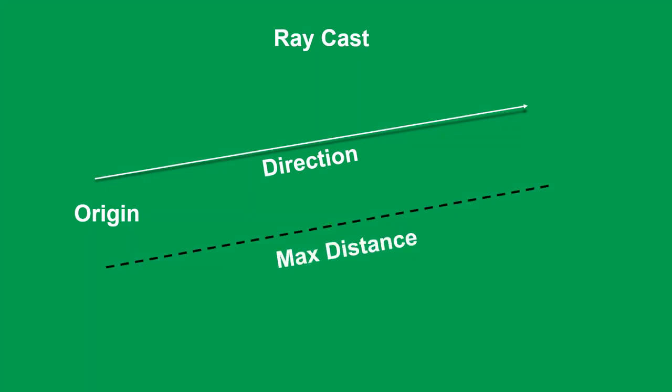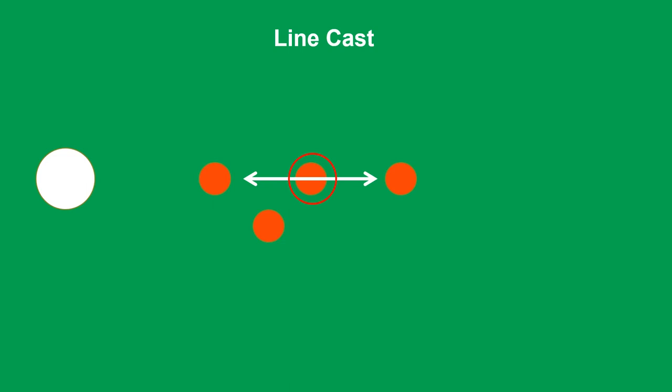To perform Raycasting, you will have to first provide the origin — from where you want to emerge your ray. Second is the direction, in which direction you want to cast the ray. And third is the magnitude, which means how far this ray can go. Linecast is similar to Raycast, but differs by just one parameter. It takes two Vector3 points instead of a magnitude: the first point is the starting point, and the second point is the ending point. Everything else is just like Raycast.